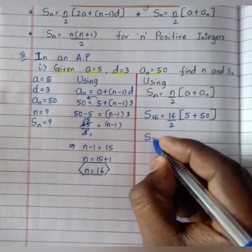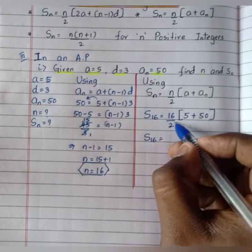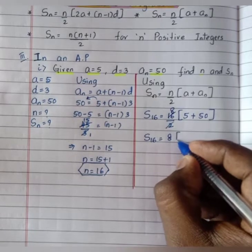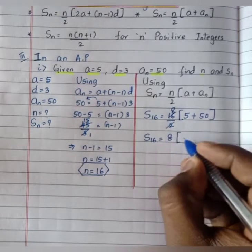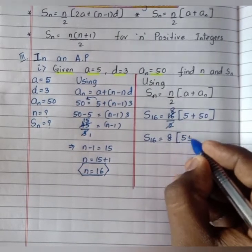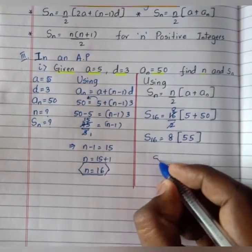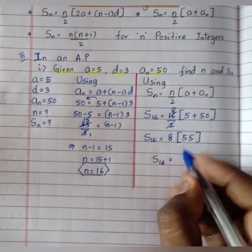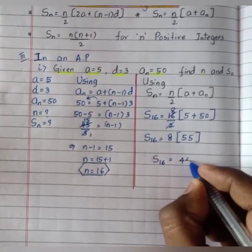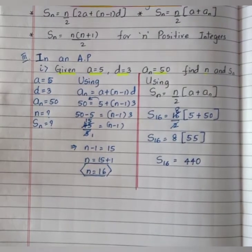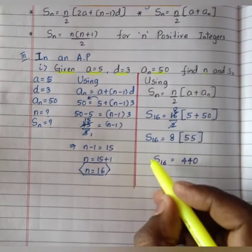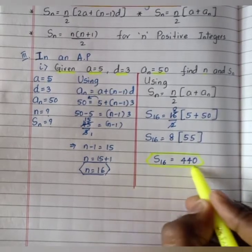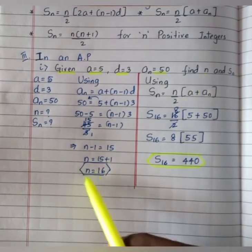S16 equals 16 divided by 2, which is 8, times 5 plus 50 which is 55. Therefore S16 equals 8 times 55 which is 440. The sum of 16 terms is 440.